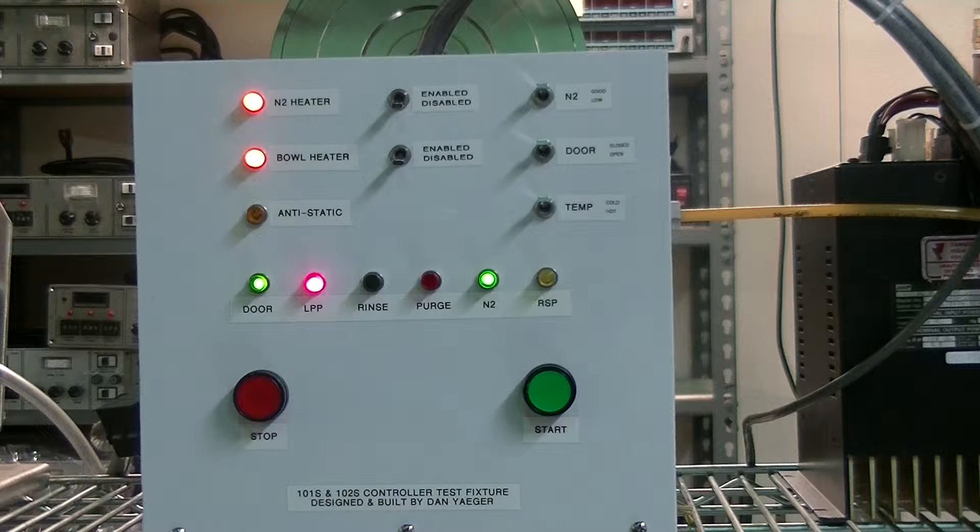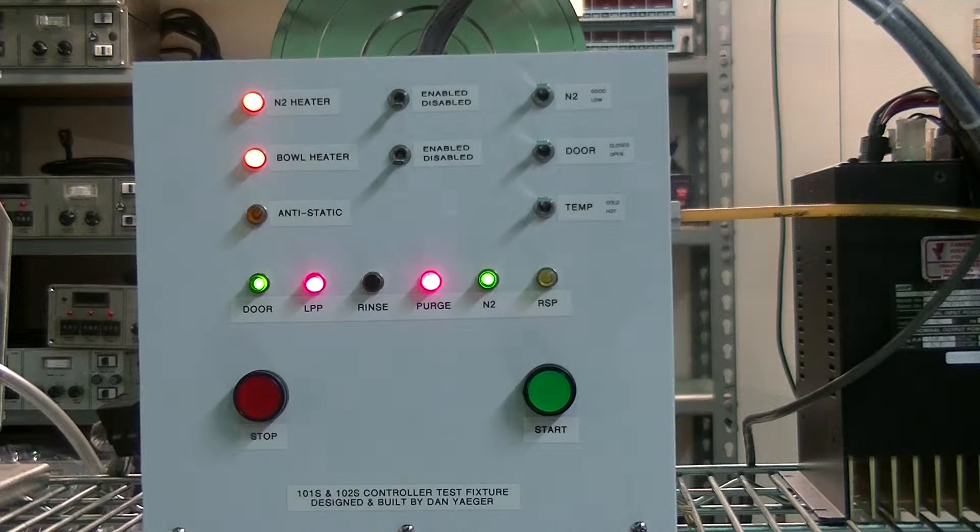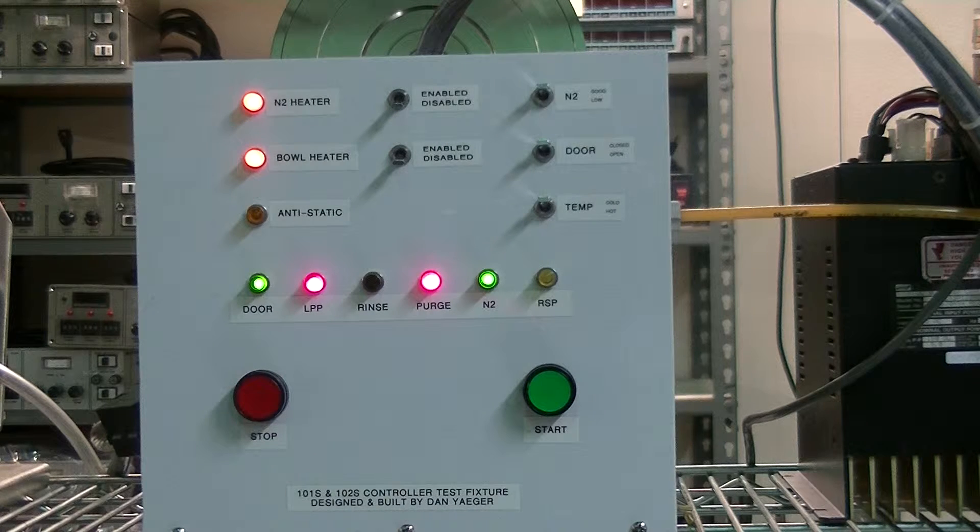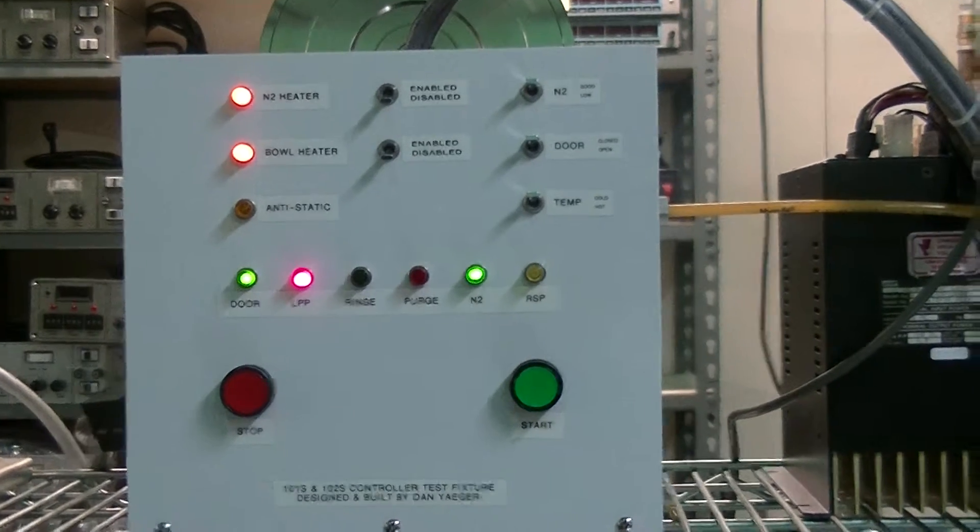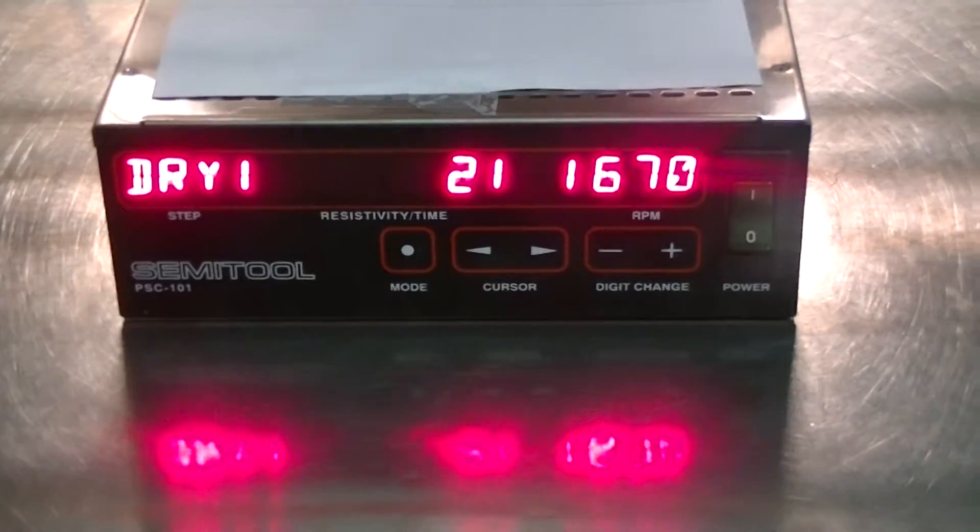All right, now you can see the N2 heater has been enabled. The bowl heater has been enabled. You're going to have your N2 being pressurized and being distributed through the chamber and the purge started to get all of the residual water from the DI lines. And that has shown that we are in dry one here.